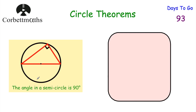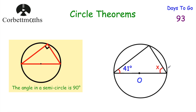The first circle theorem we're going to look at is that the angle in a semicircle is 90 degrees. So if you've got a triangle inside a circle where this line goes through the centre of the circle — so this is the diameter — then the angle at the top will be 90 degrees. This is always a right angle. Let's have a look at an example.